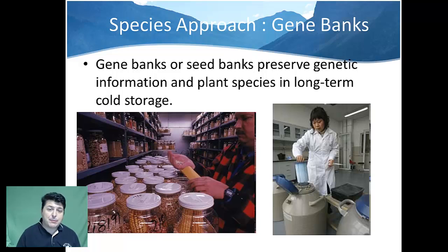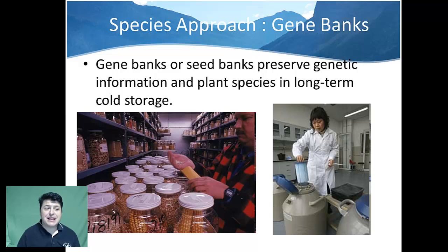One example of a species approach would be the establishment of gene banks. Gene banks or seed banks will preserve genetic information and plant species in long-term cold storage. By preserving that genetic information or those seeds, we are focusing on those individual species and protecting them into the future.